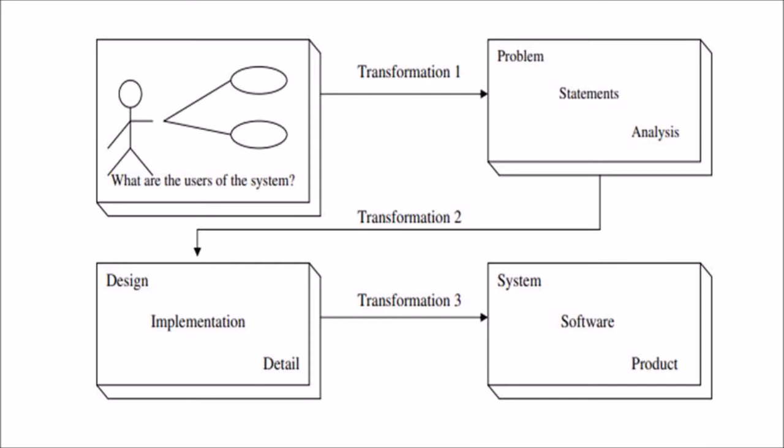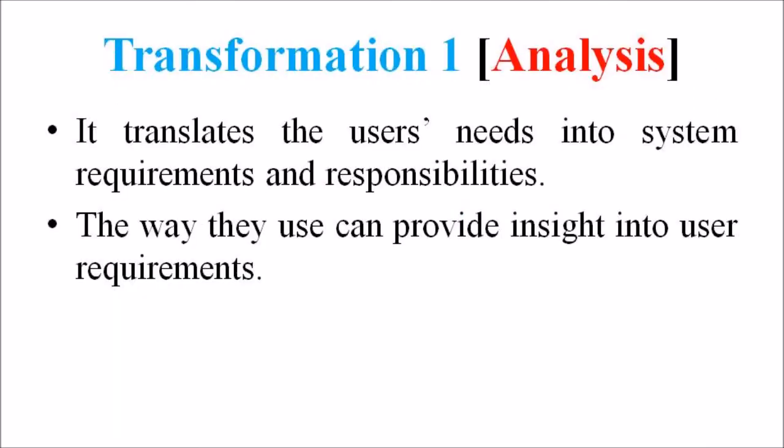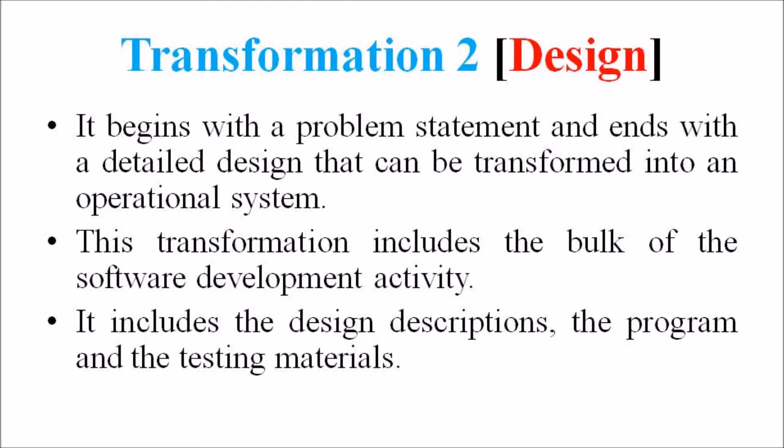Considering transformation one — the analysis phase — these phases translate the user needs into system requirements and responsibilities. In transformation two, the design phase, it begins with a problem statement and ends with a detailed design that can be transformed into an operational system. This transformation includes the bulk of the software development activity, including definition of how to build the software, its development, and its testing. It includes the design description, the program, and the testing materials.